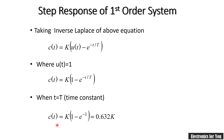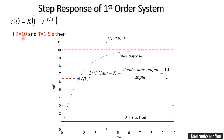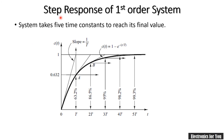Consider an example with K equals 10 and T equals 1.5 seconds. Plotting the step response, we can see the response stabilizes after some time and reaches the steady state output. At t equals T, we get 63.2 percent of the final output.